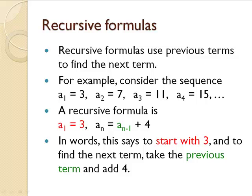So a recursive formula would say A sub 1 is 3, and A sub n, the nth term, would be A sub n minus 1, the previous term, plus 4. So what this is saying is start with 3. To find the next term, take the previous term and add 4.